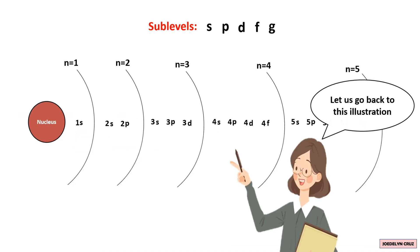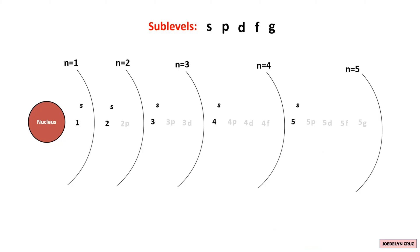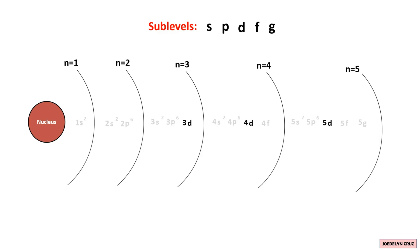Let us go back to this illustration and distribute the electrons among the sublevels. For the S sublevel: 2 electrons. For the P sublevel: 6 electrons. For the D sublevel: 10 electrons. For the F sublevel: 14 electrons. And for the G sublevel: 18 electrons.